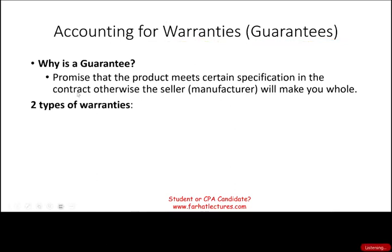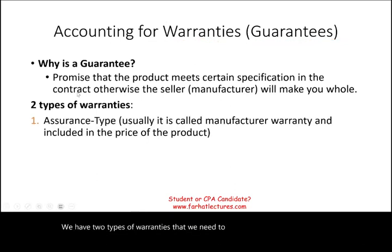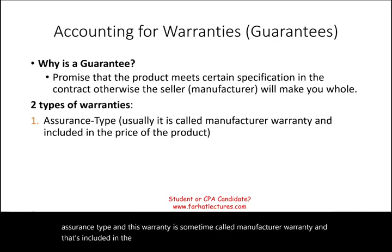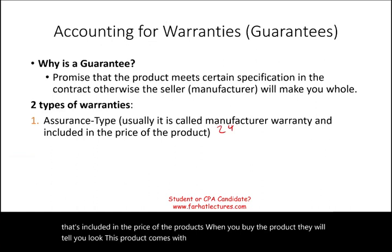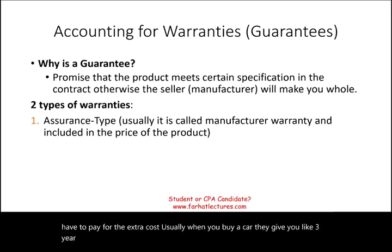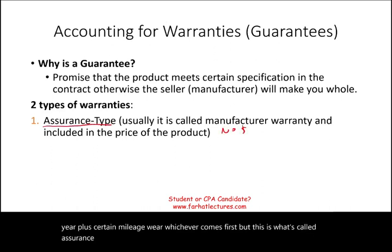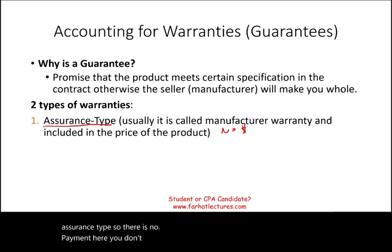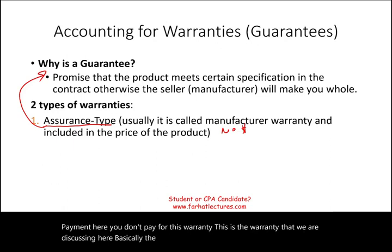We have two types of warranties. The first is the assurance type, sometimes called manufacturer warranty, which is included in the price of the product. When you buy the product, they tell you it comes with a two- or three-year warranty at no extra cost. When you buy a car, for example, they give you three years plus a certain mileage, whichever comes first. With this type, there is no separate payment — it is simply the promise that the product will work as expected.